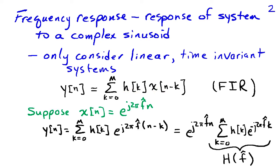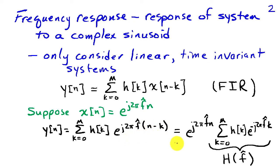To find the frequency response, we assume that the input is a complex sinusoid with frequency f-hat. We substitute this definition for x of n into our expression for the system output, and we obtain that y of n is the sum from k equals 0 to m of h(k) e to the j 2 pi f-hat times (n minus k). We factor out e to the j 2 pi f-hat, leaving the sum from k equals 0 to m of h(k) e to the minus j 2 pi f-hat k. We call this sum H of f-hat, and this is the frequency response of the system.